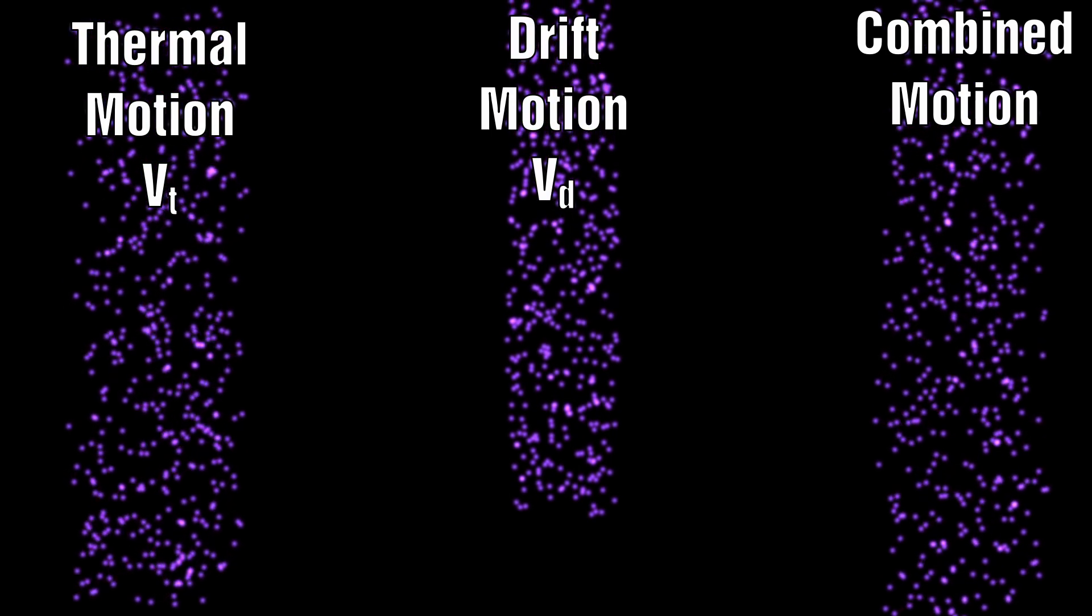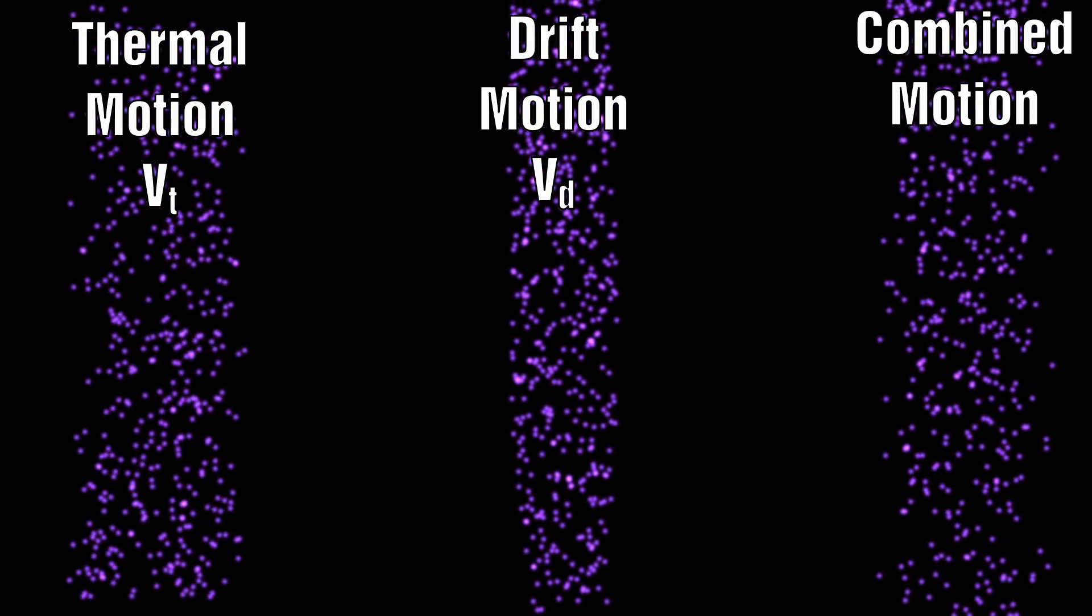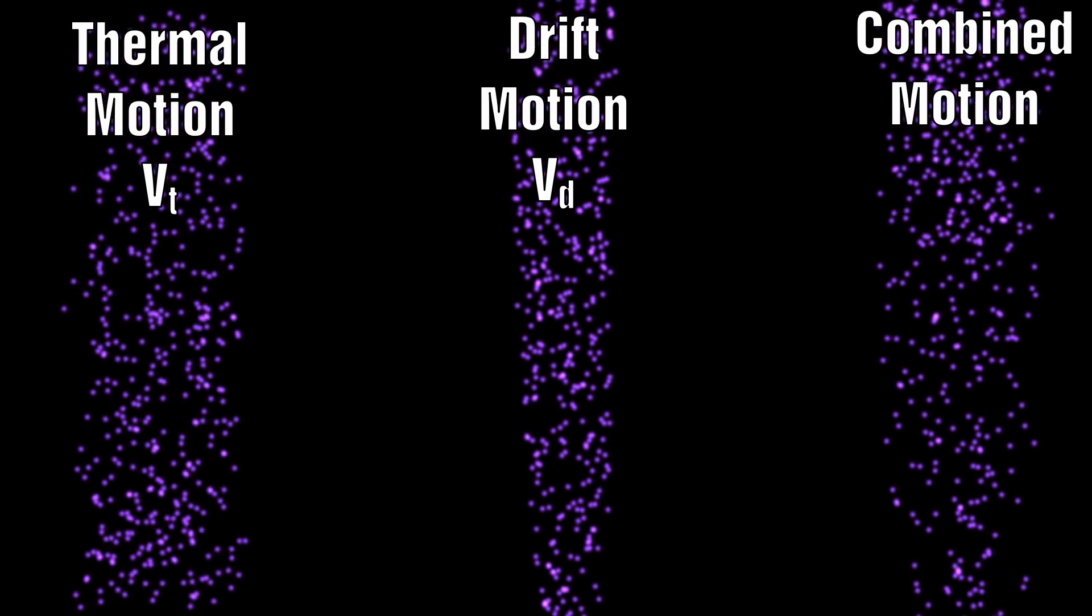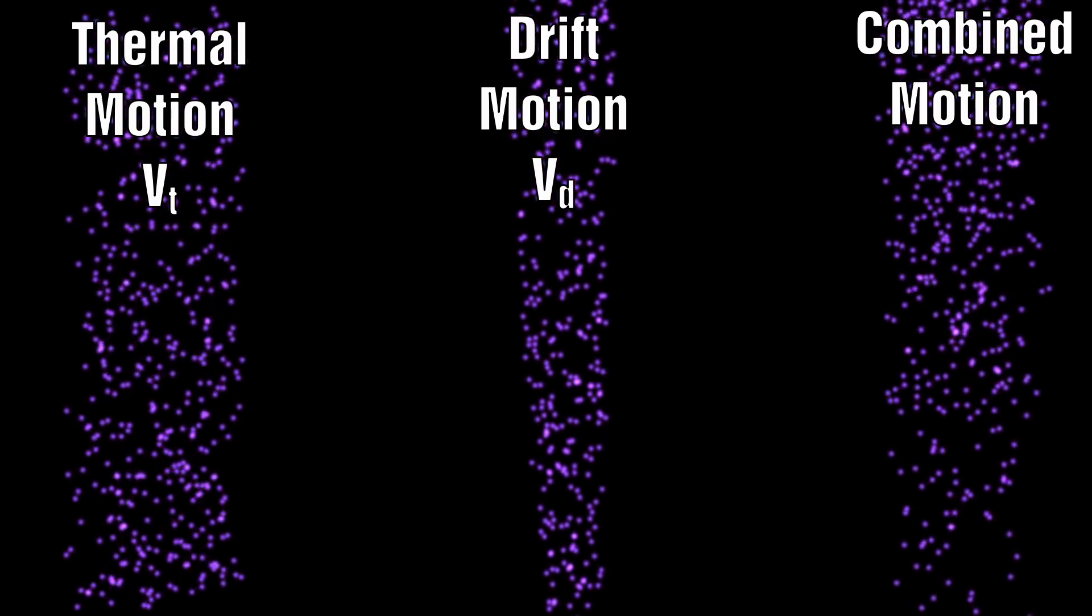If the current density increases so that the drift velocity becomes larger, the motion becomes similar to a beam, and an instability sets in which is related to the two-stream instability. This produces a double layer which may be relatively stable. If the voltage over the tube is increased in order to increase the current, the higher voltage is taken up by the double layer and the current is not increased.